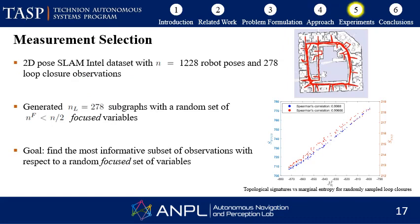We first consider a measurement selection problem. Using the 2D pose SLAM Intel dataset, we generated 278 subgraphs that contain all robot poses and randomly sampled loop closure observations. The focused subset of variables was bounded and also randomly selected in each run. The goal is to find the most informative subset of observations with respect to the focused set of variables. The results show a very high correlation between both topological signatures and the focused objective function, meaning these approximation methods can be used to solve the original problem.